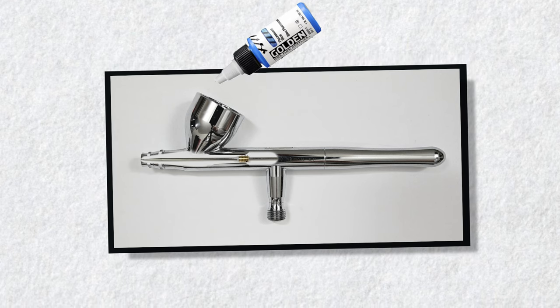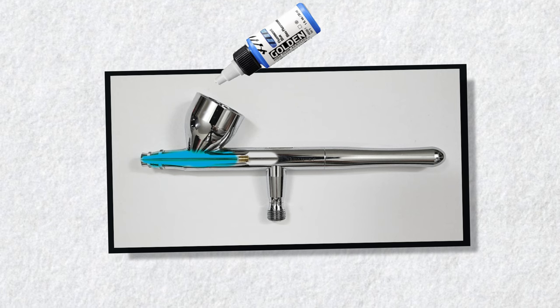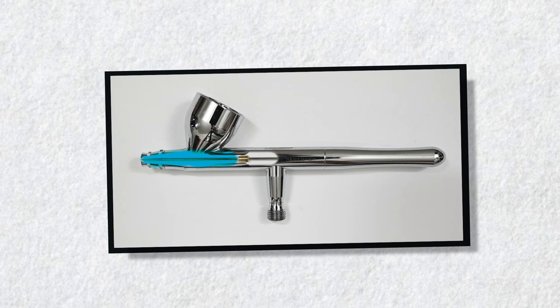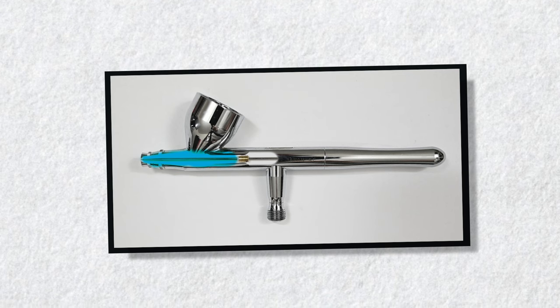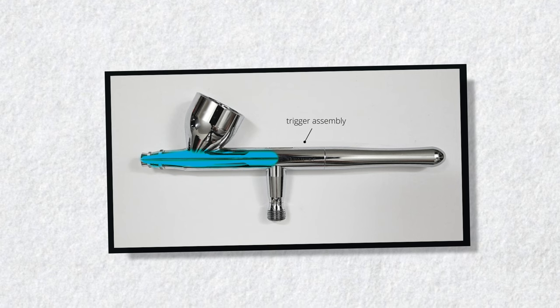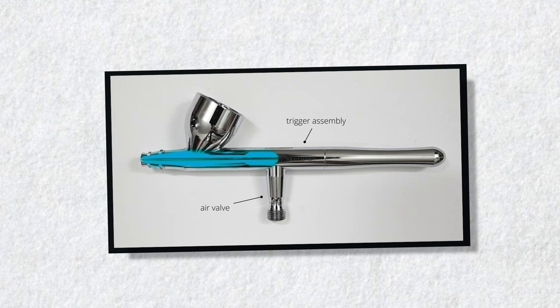When paint is added to the cup, this seal kind of acts like a dam, restricting the paint to the front of the airbrush where it's supposed to be. But if this seal is too loose or damaged in some way, that paint can easily find its way into the trigger assembly, or even worse, down into that air valve.